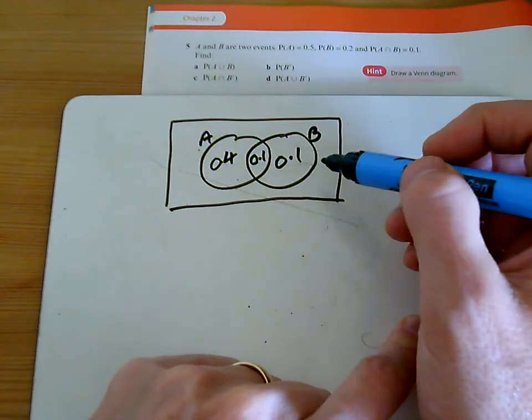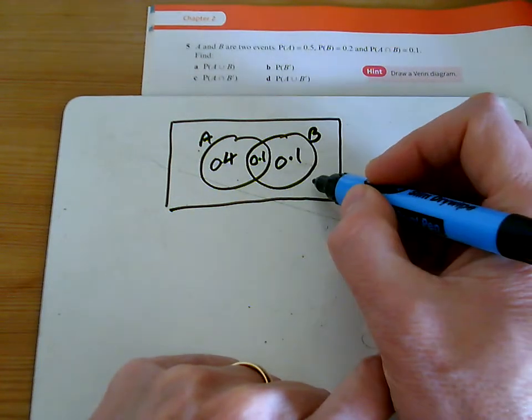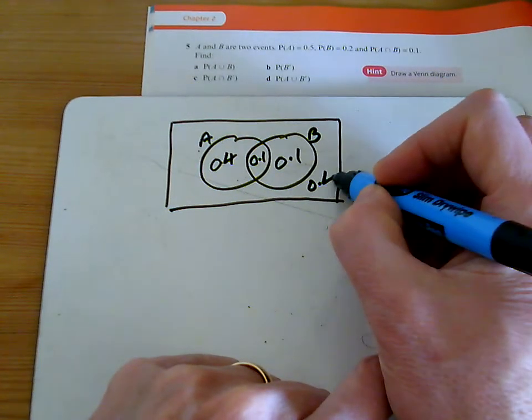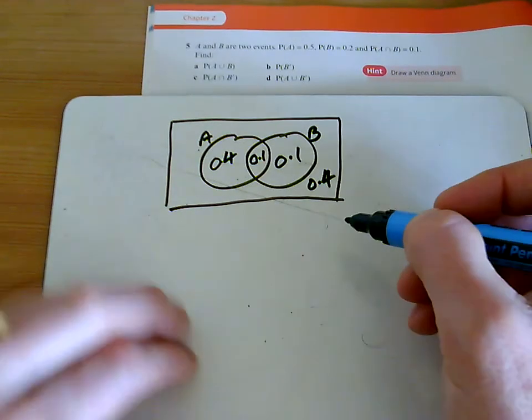Add all that up, and you've got 0.6, so we still need a little bit more. So we need a 0.4 around the outside, so that everything adds up to 1.